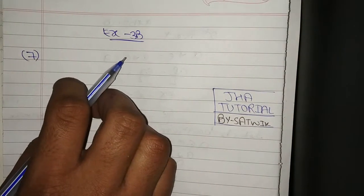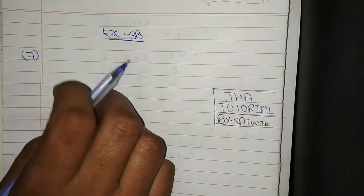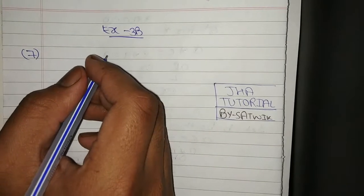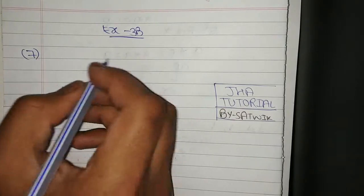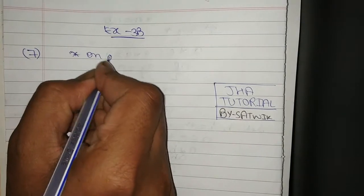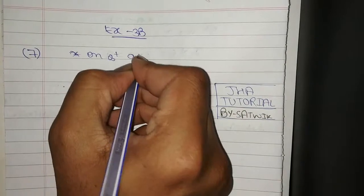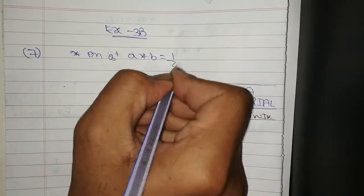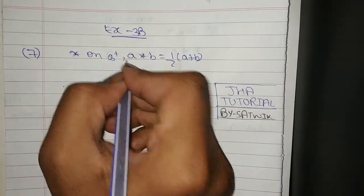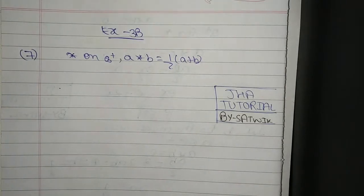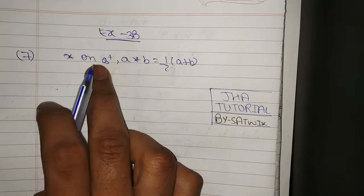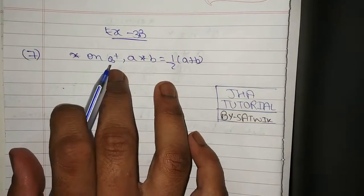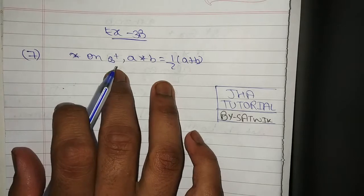Let Q+ be the set of all positive rational numbers. The operation star on Q+ is defined by a★b = ½(a+b). We need to prove this is a binary operation. The star operation is defined on Q+, which is the set of all positive rational numbers.